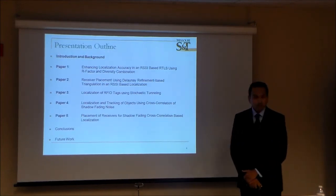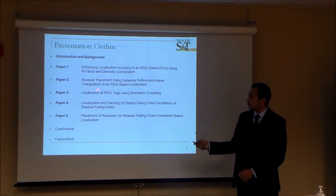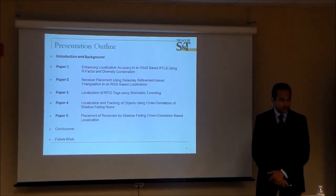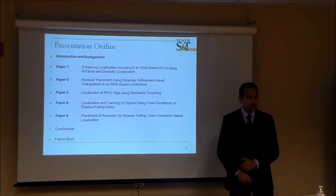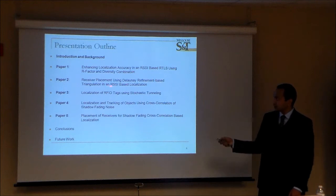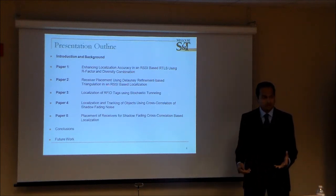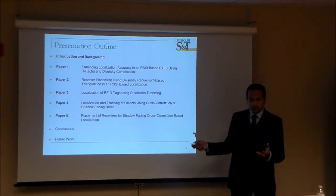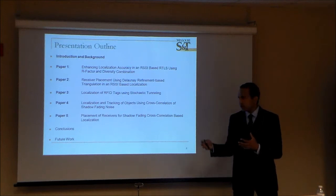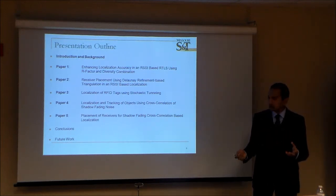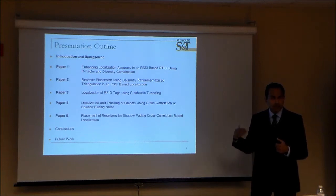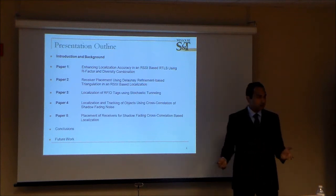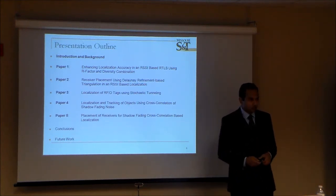This dissertation is organized into five chapters. The first chapter looks into the errors involved in estimating the radial distance between the transmitter and the receiver from signal strength. The second chapter is about where to place receivers in a workspace to achieve a certain accuracy. The third paper presents my new idea applied to RFID localization. The fourth chapter extends the third to frequencies around 2.45 GHz, and the final chapter addresses receiver placement using my cross-correlation based localization technique.